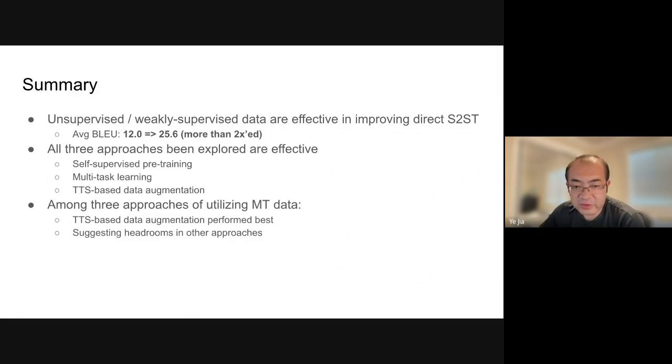Here's the summary of our results. We've demonstrated that unsupervised data and weakly supervised data are both effective in improving the quality of direct speech-to-speech translation. The results on the CVSS-C dataset show that we improve the translation quality BLEU score from 12 to 25.6, which is more than doubled.